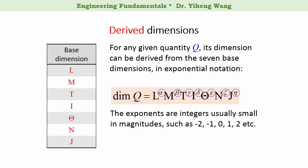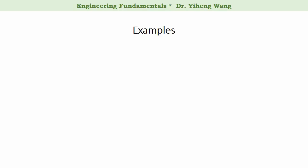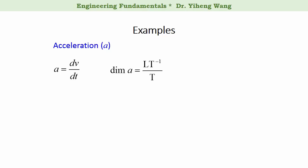Now let's look at some examples. For physical quantity acceleration, we know that acceleration is the time derivative of velocity. Therefore, the dimension of acceleration is L (length) times T (time) to the negative first power — which is the dimension of velocity — divided by T, the dimension of time. When we combine these together, we get the dimension for acceleration: L times T to the negative second power.